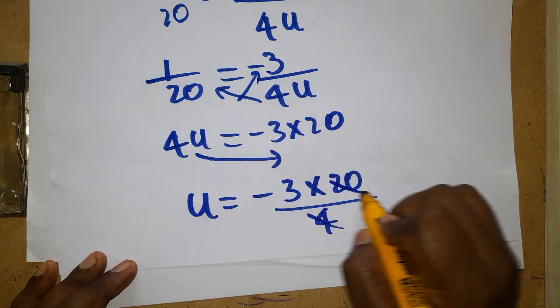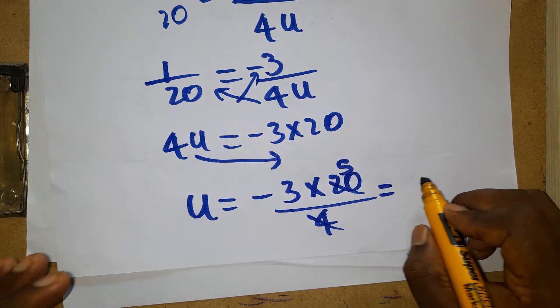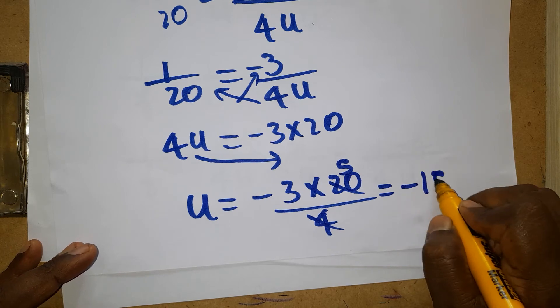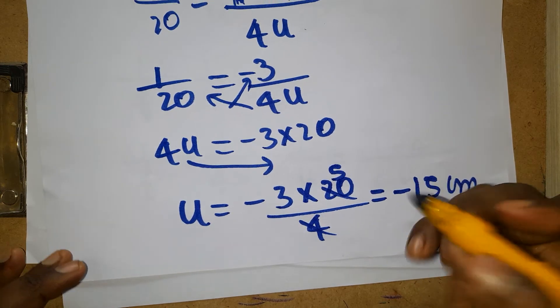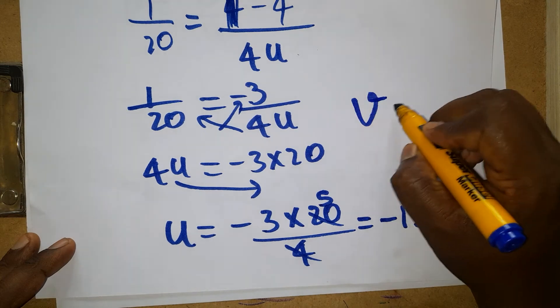So how much will we get? 5, 5 threes, we can have it as 15 centimeters, which is going to give us minus 15 centimeters. u is minus 15 centimeters.